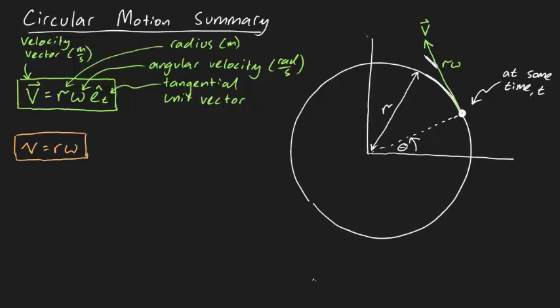Unlike velocity, the acceleration of the particle will be partially in the tangential direction and partially in the normal direction. The tangential component has a magnitude of v dot, and the normal component has a magnitude of v squared over r.